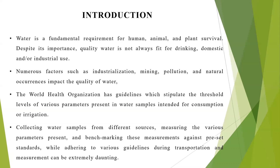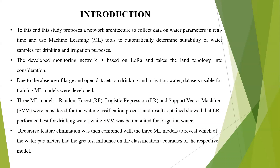Collecting water samples from different sources, measuring the various parameters present, and benchmarking these measurements against pre-set standards while adhering to other guidelines during transportation and measurements can be extremely daunting. To this end, this study proposes a network architecture to collect data on water parameters in real-time and use machine learning tools to automatically determine the suitability of water samples for drinking and irrigation purposes. The developed monitoring network is based on LoRa and takes the land topology into consideration.